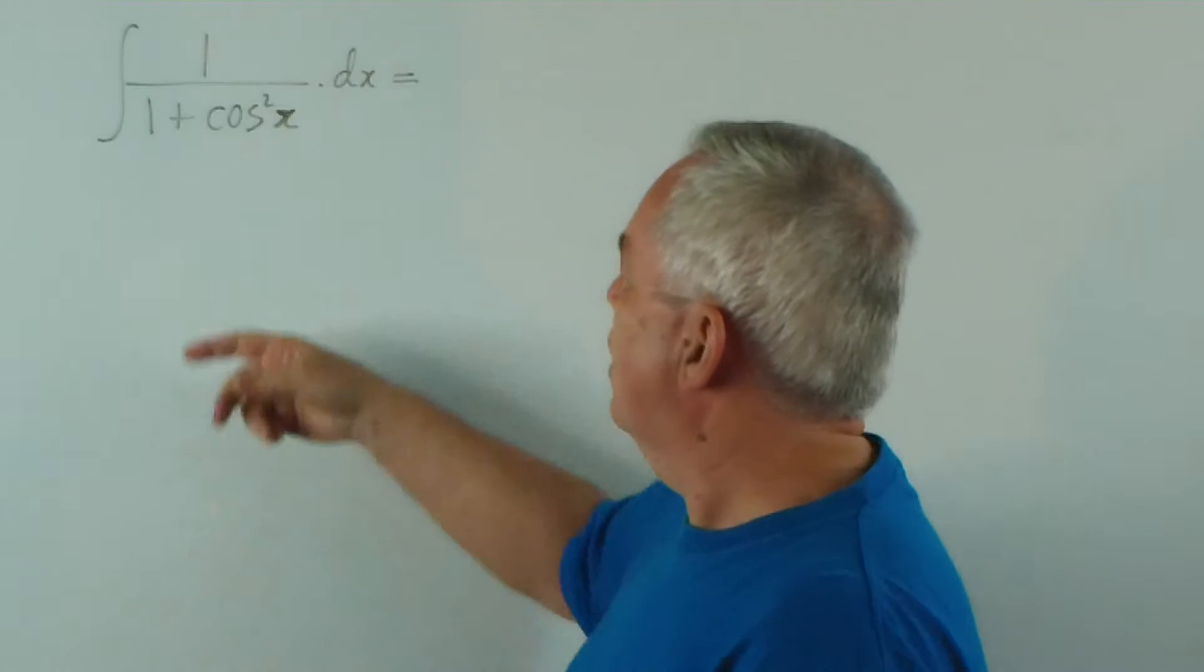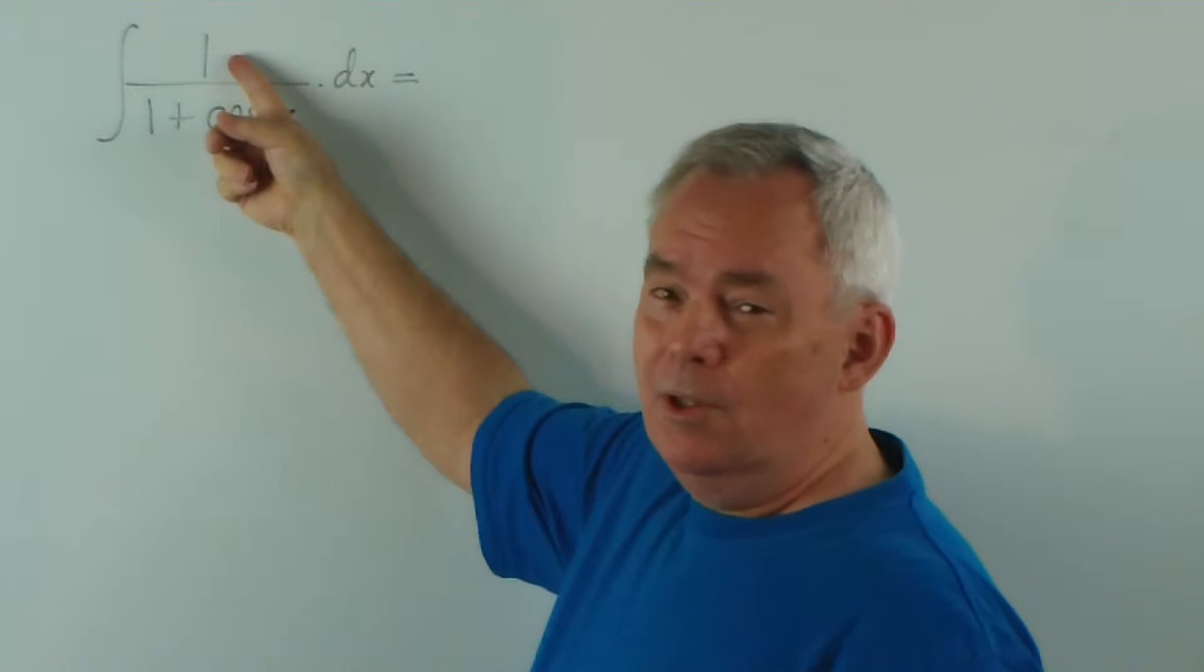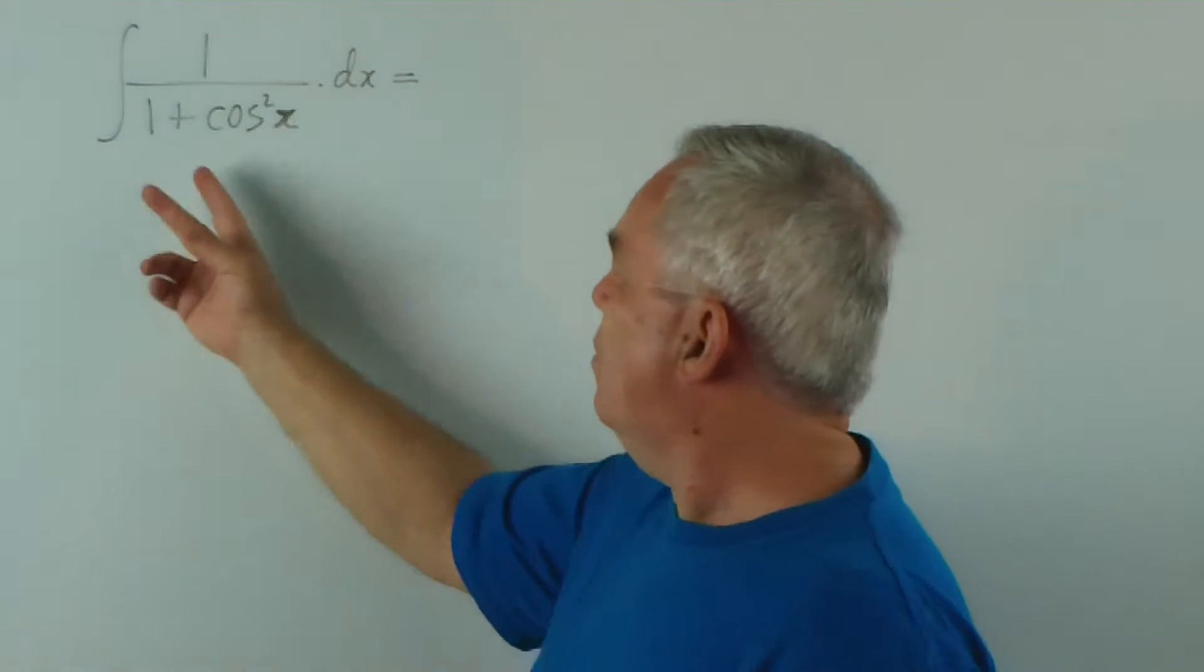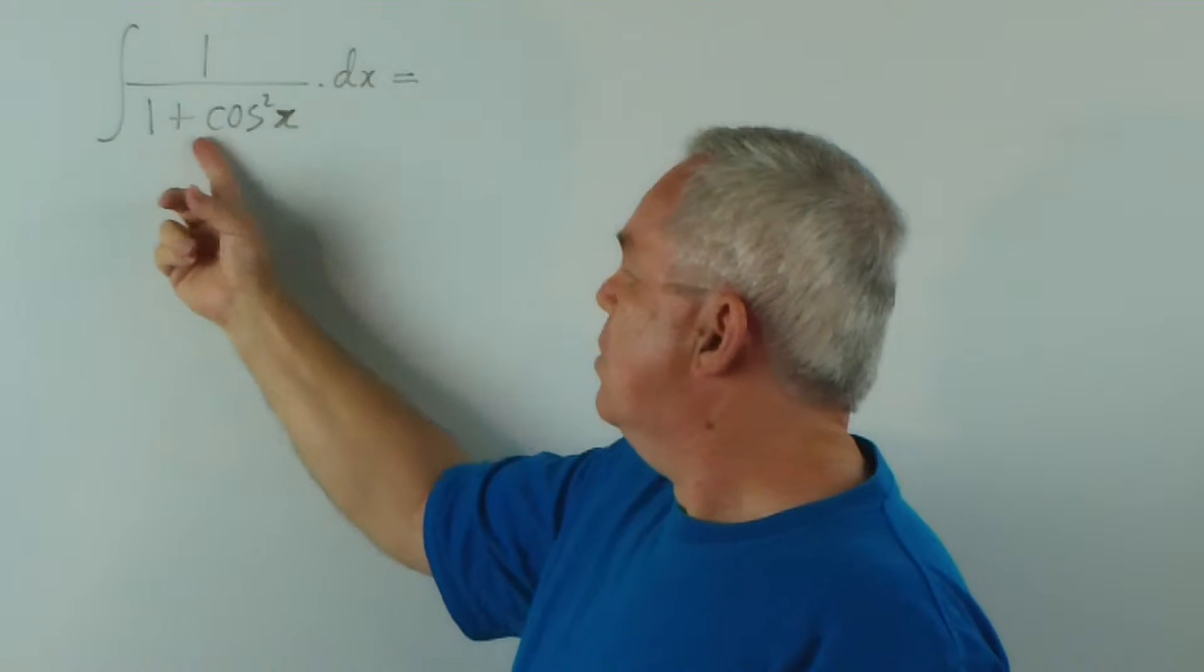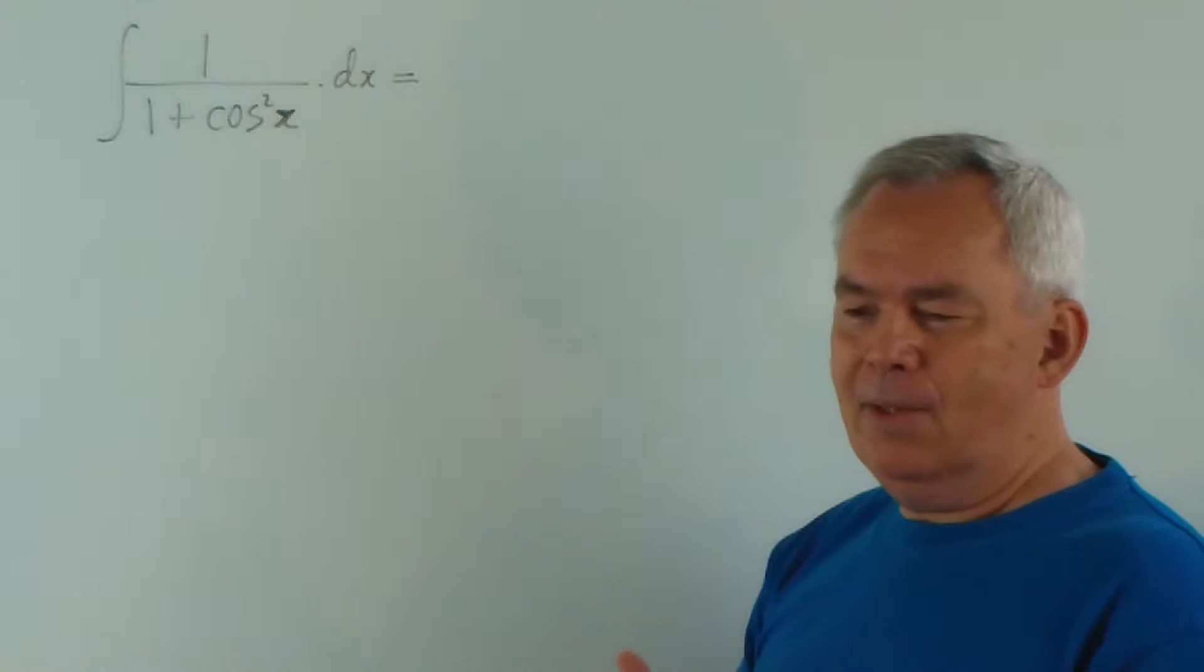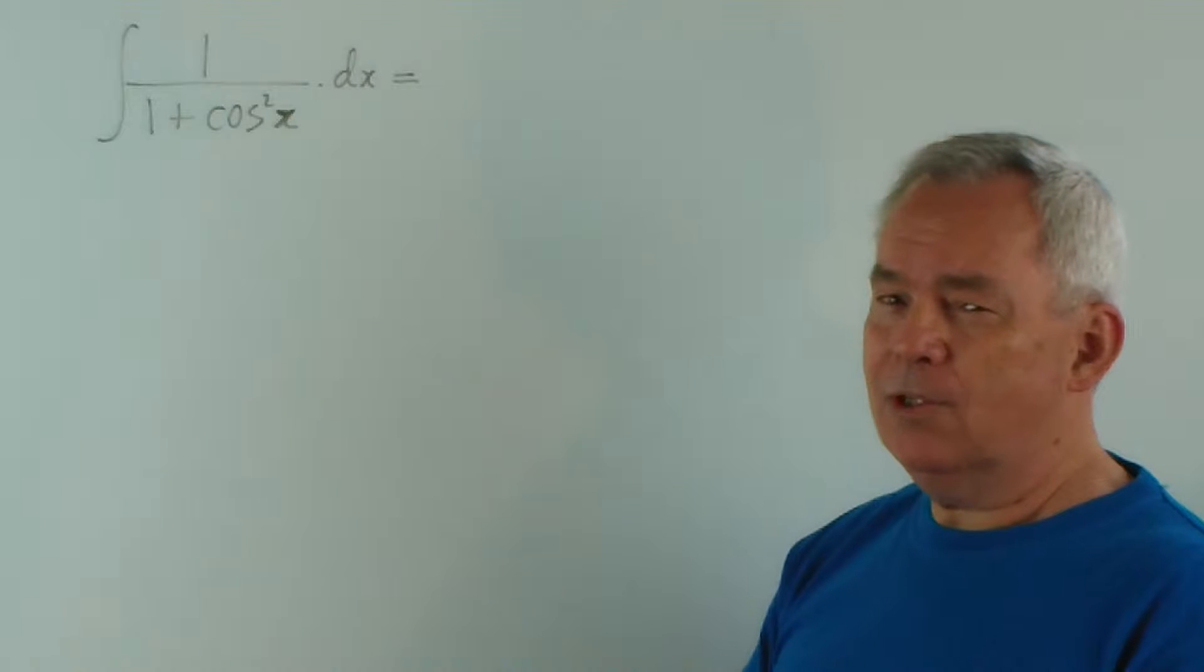We have a fraction. The numerator is not the derivative of the denominator, so we don't have any logarithmic structure here. But what we do have is a sum of squares in the denominator, which would suggest an inverse tan function.